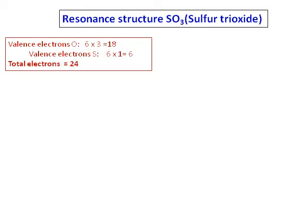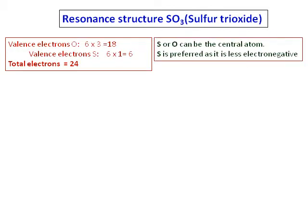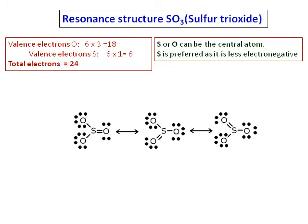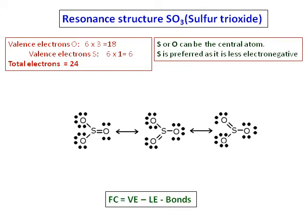The next step is to identify the central atom. Sulfur or oxygen can be the central atom, but we prefer sulfur because it is less electronegative.